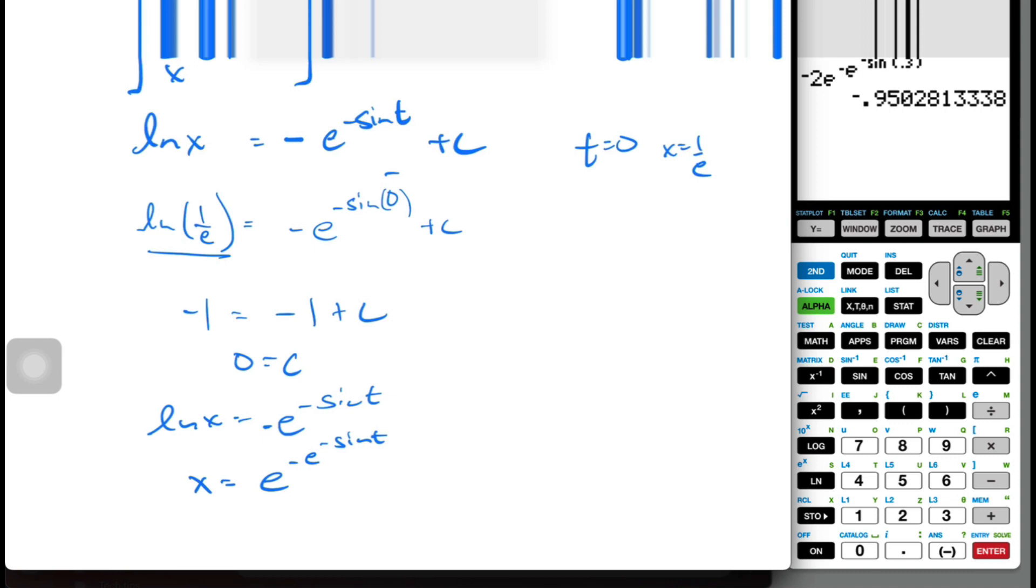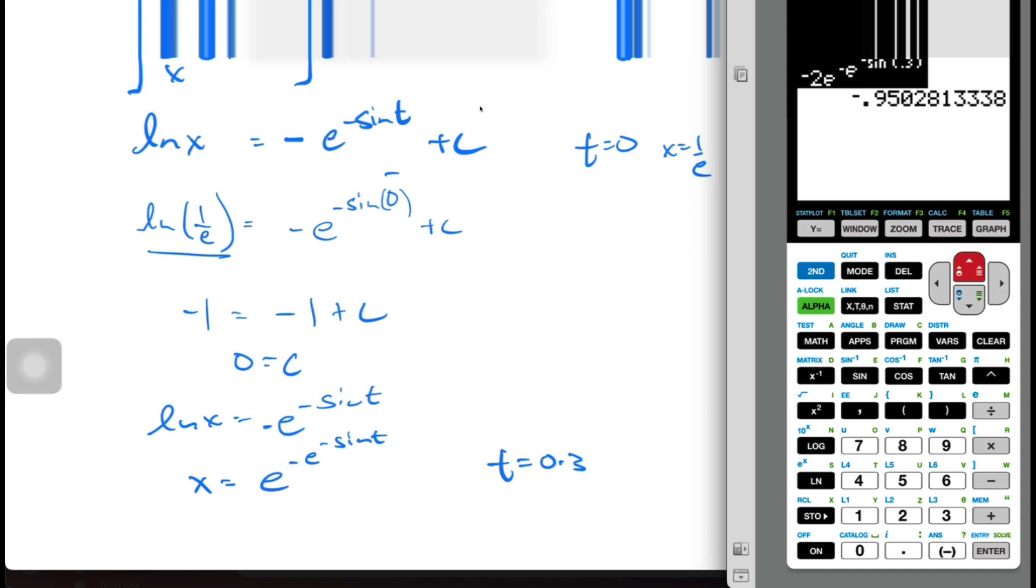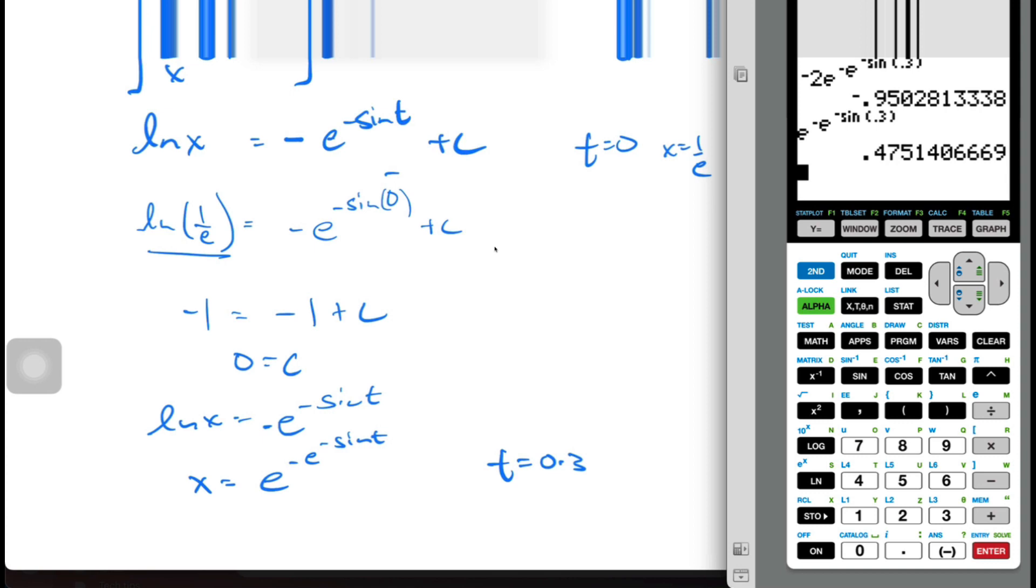I plug in the value for t equals 0.3, and if I go here, I was almost correct though I typed in on my own for a bit there, but if I delete that, this is 0.47514.